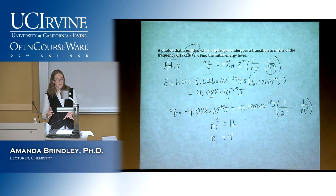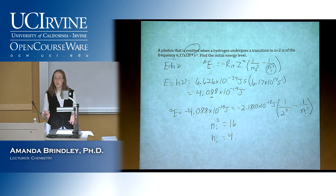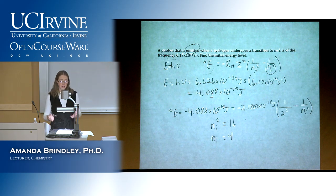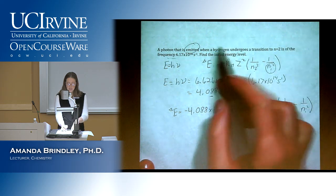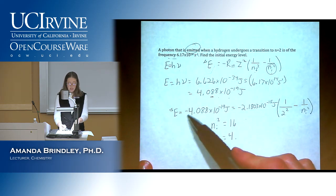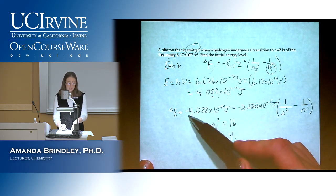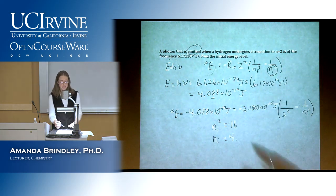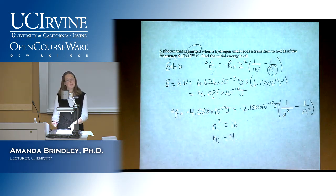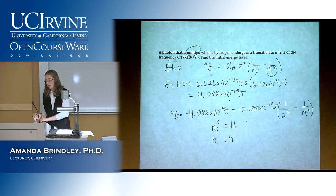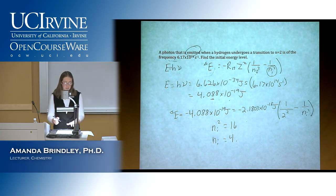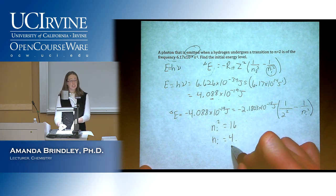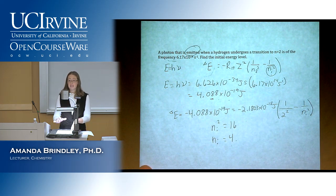Just round if you're close: 3.1 rounds to 3, 3.9 rounds to 4. But if you get 3.4 or 3.6, don't round — that means you made a mistake. Go back and figure out where you messed up. Most likely, if it was a photon emitted problem, you forgot to make delta E negative.